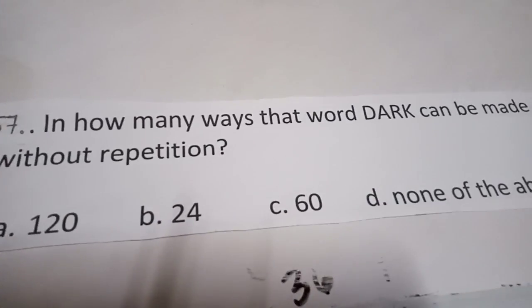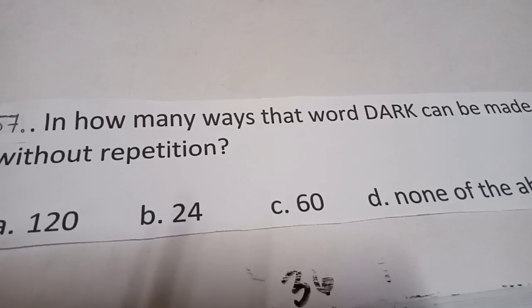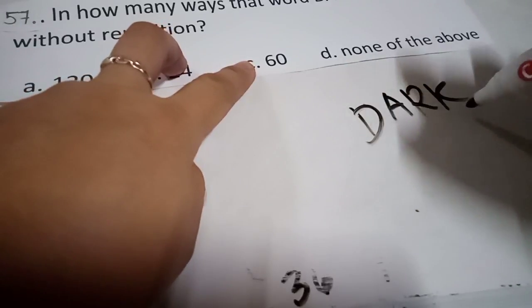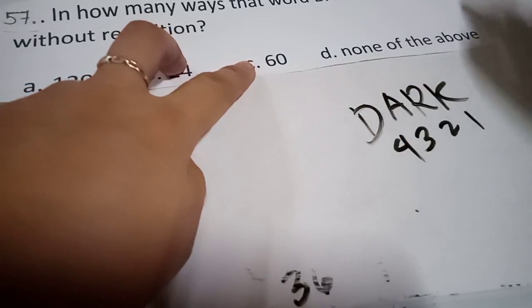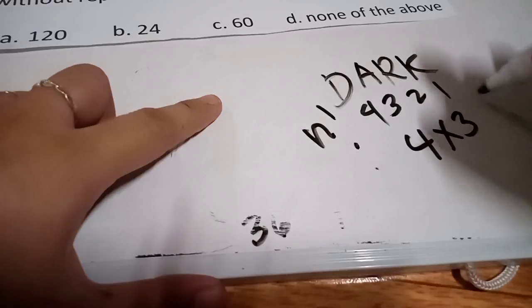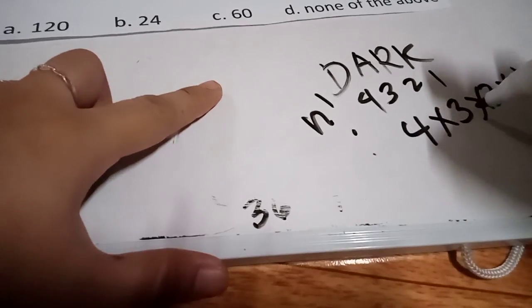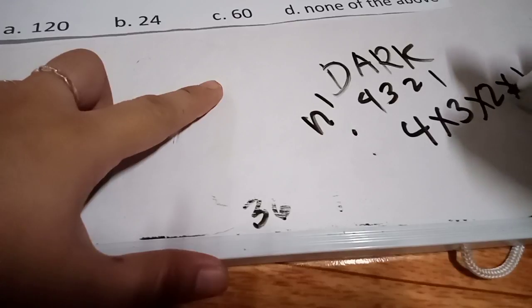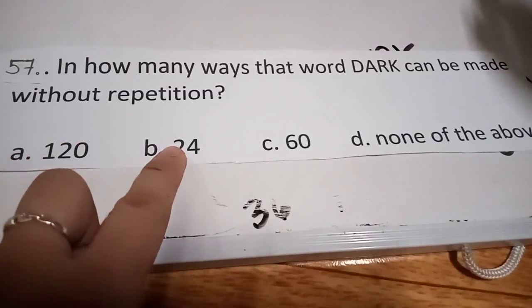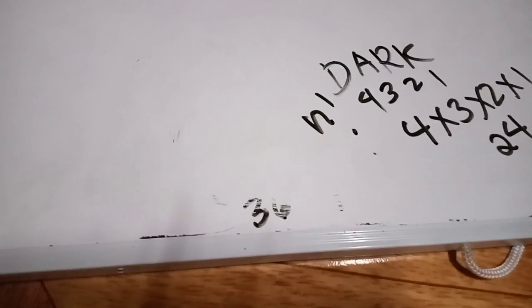For number 57: in how many ways can the word DARK be arranged without repetition? Recall n factorial. The word DARK has 4 letters, so we compute 4 factorial: 4 times 3 times 2 times 1. That is 4 times 3 equals 12, times 2 equals 24, times 1 equals 24. The best answer is letter B.